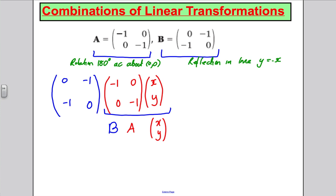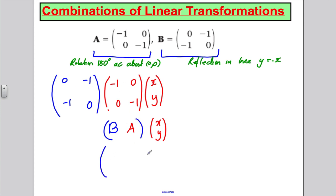If I want to work out what the combined transformation is, I can use matrix multiplication and work out matrix BA. Multiplying the two out: this row times this column gives 0, this row times this column gives 1, this row times this column gives 1, and this row times this column gives 0. So matrix BA is the matrix (0, 1; 1, 0).